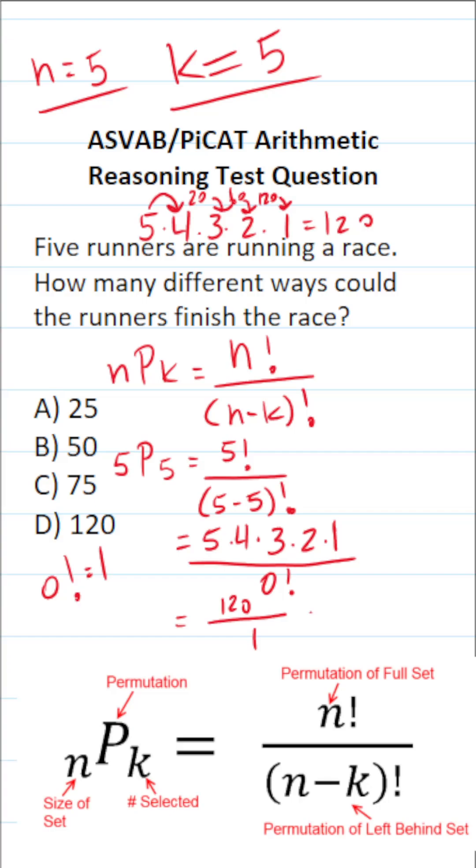120 divided by one is 120. So there are 120 different ways these five people can finish the race. So this one is D, of course.